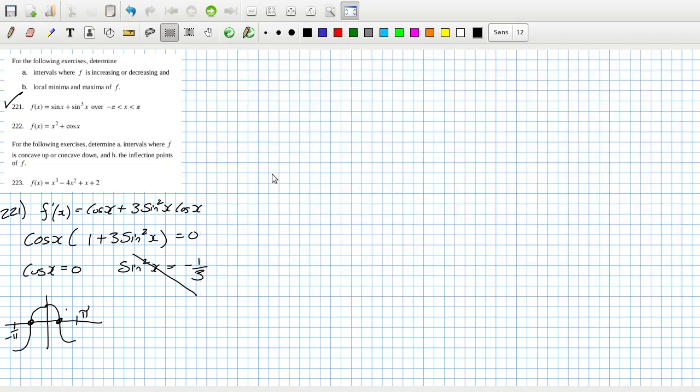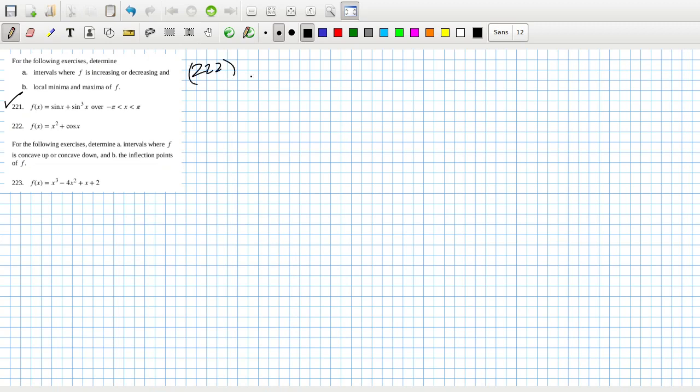Let's have a look at 222 now, very, very similar. 222, let's calculate the derivative. Derivative is 2x minus sine... oh no, I'm looking at the wrong one. No, I'm not. 2x minus sine x.